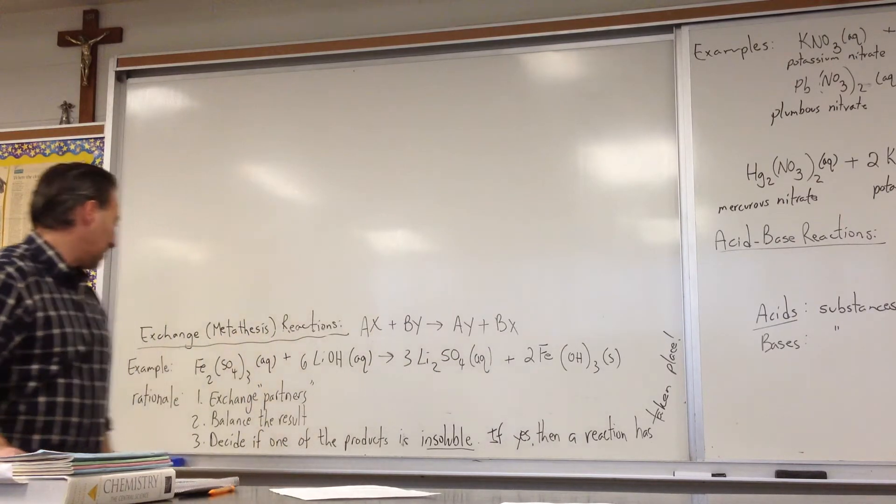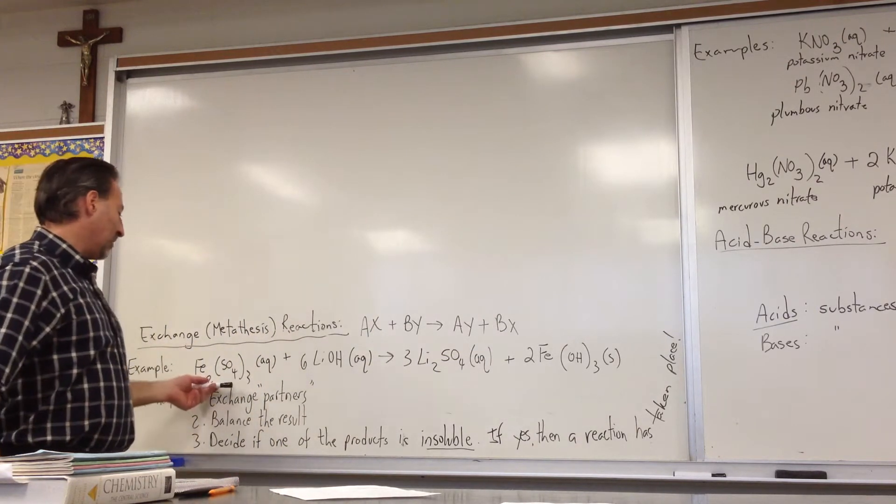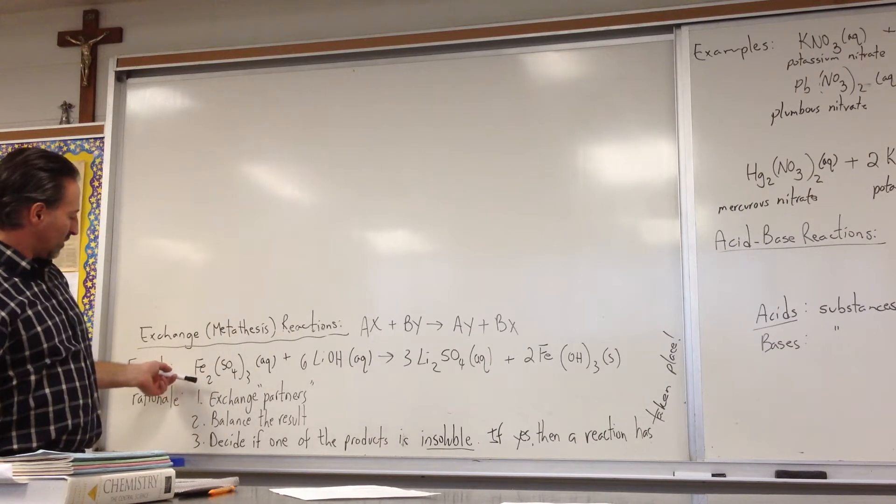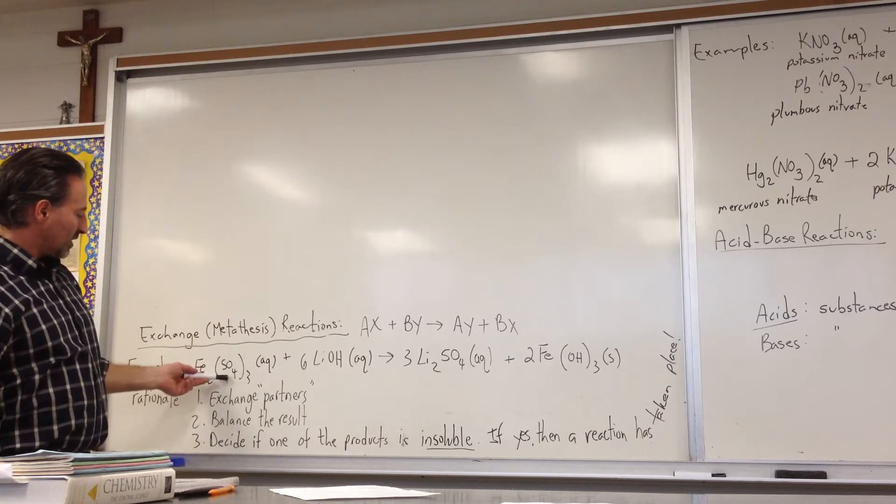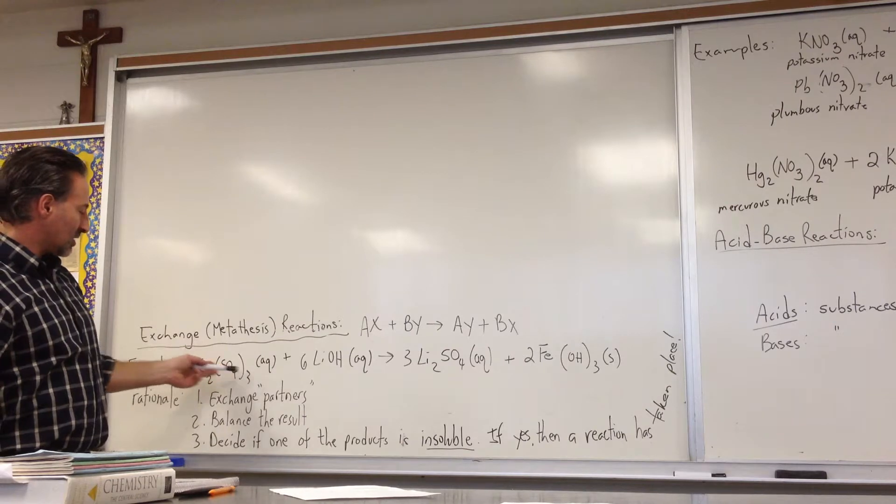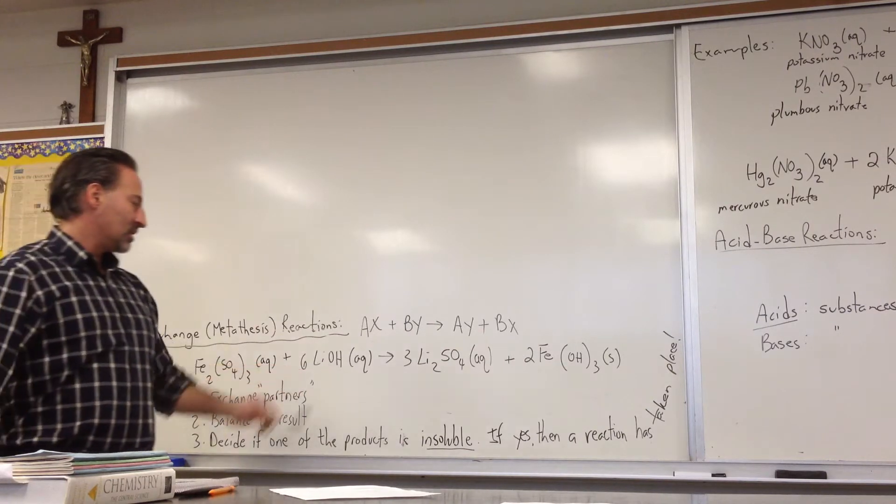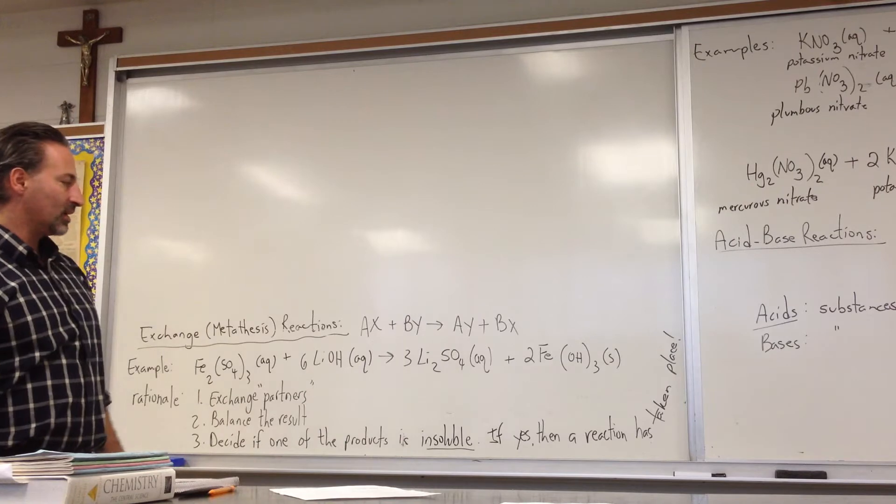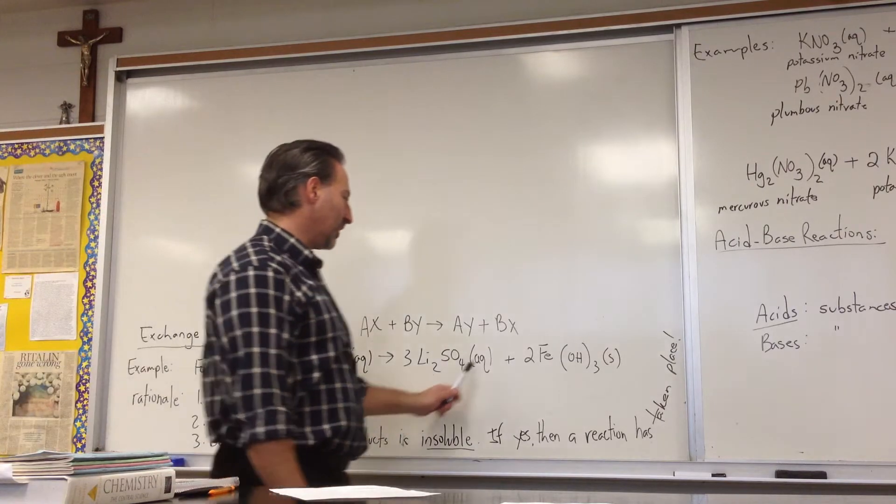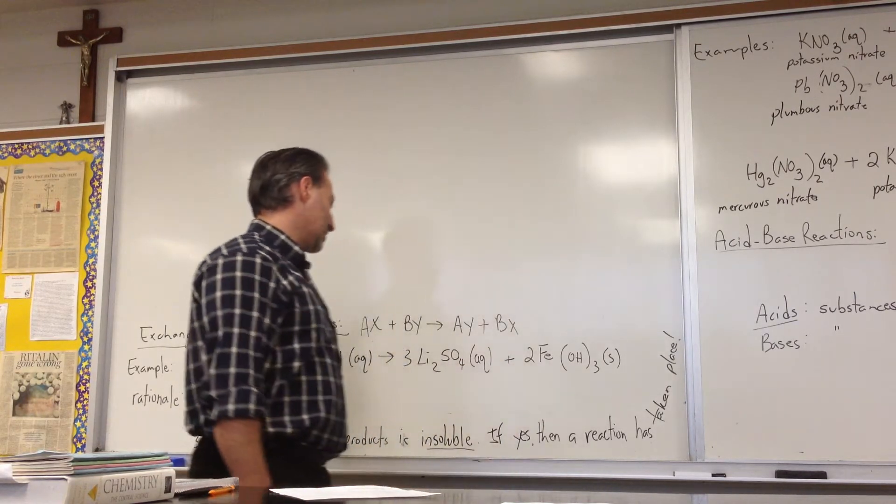An example will be where ferric, three sulfates is minus two each, so six, so this has to be ferric. Ferric sulfate is reacting with lithium hydroxide to form lithium sulfate and ferric hydroxide.